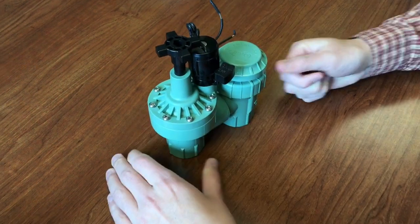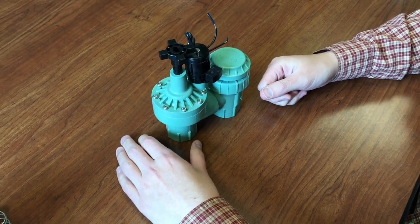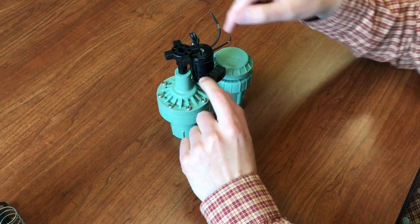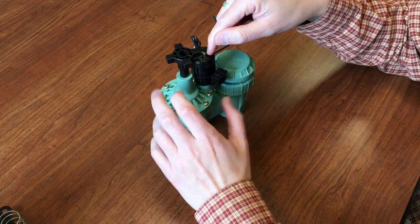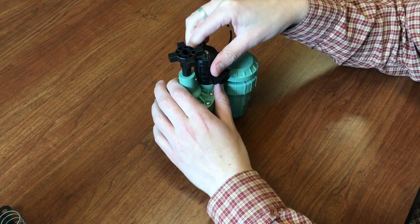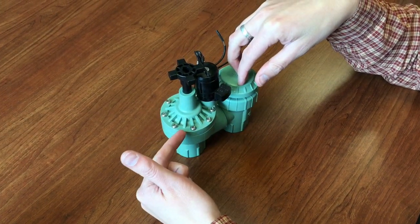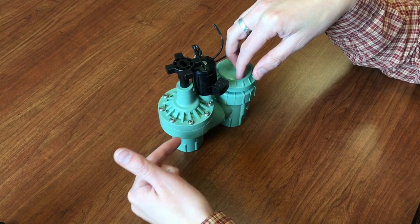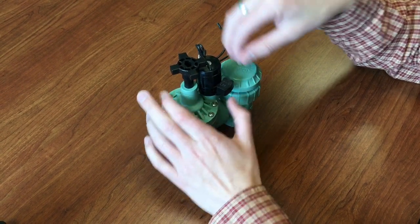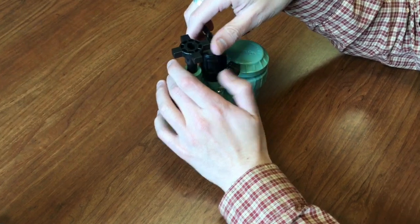So let's go ahead and get started. The first thing you would want to do is remove the actual solenoid. This is as if we were going to replace any of the internals inside, so diaphragm, spring, or this actual lid.